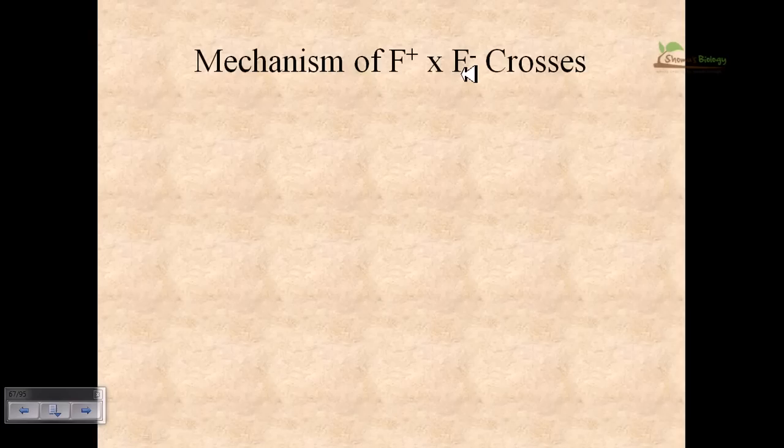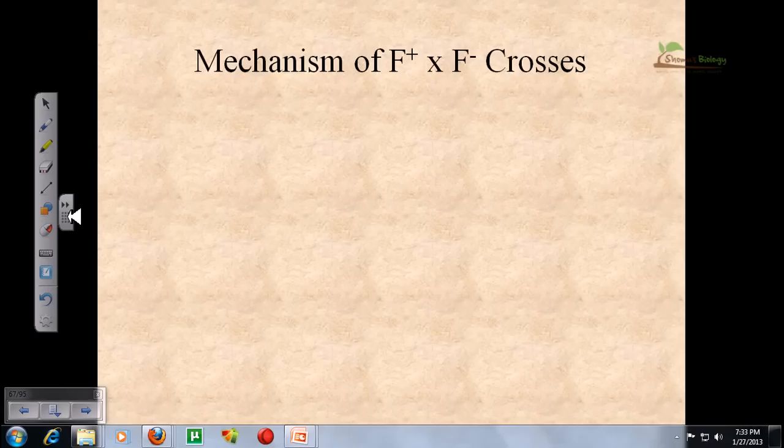Now we have previously talked about the F plus type. F plus plasmids mean the F plus type of bacterial cell, they carry the fertility plasmid with them. Now the importance of fertility plasmid is that they can provide the important necessary ingredients which are really needed for the conjugation purposes.